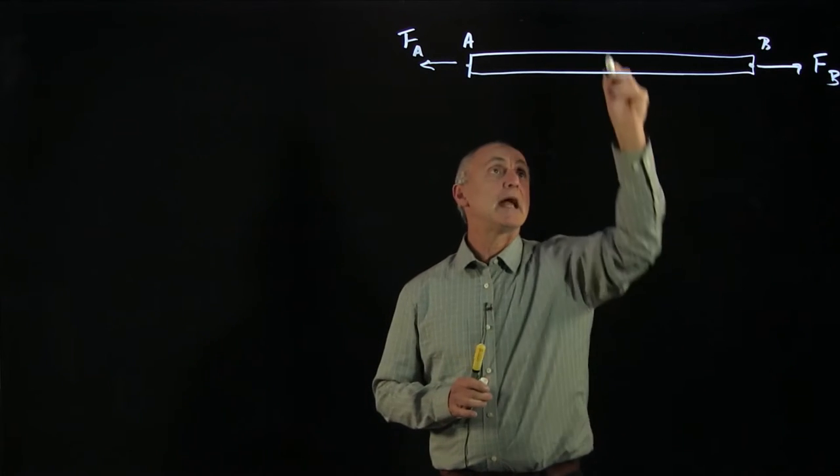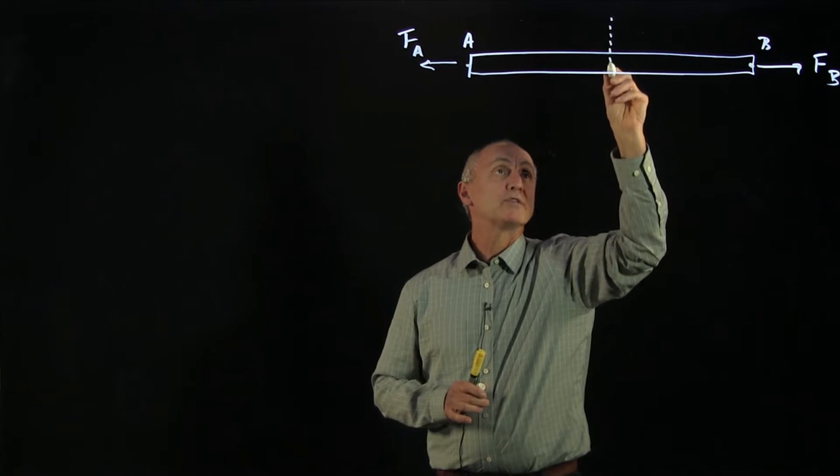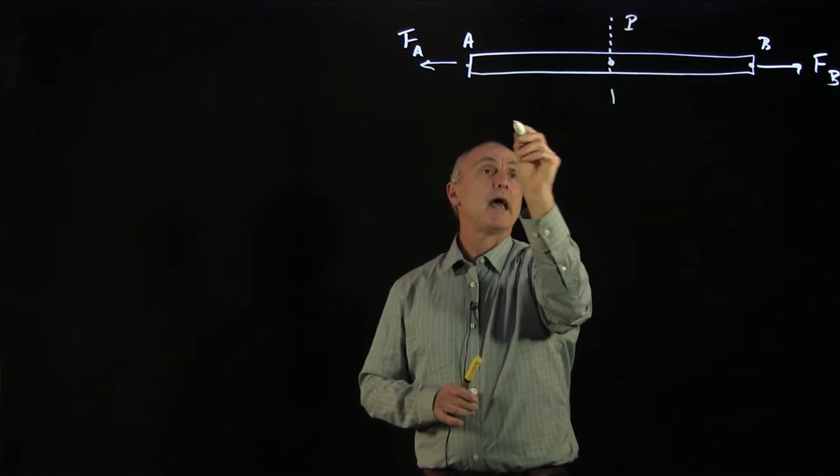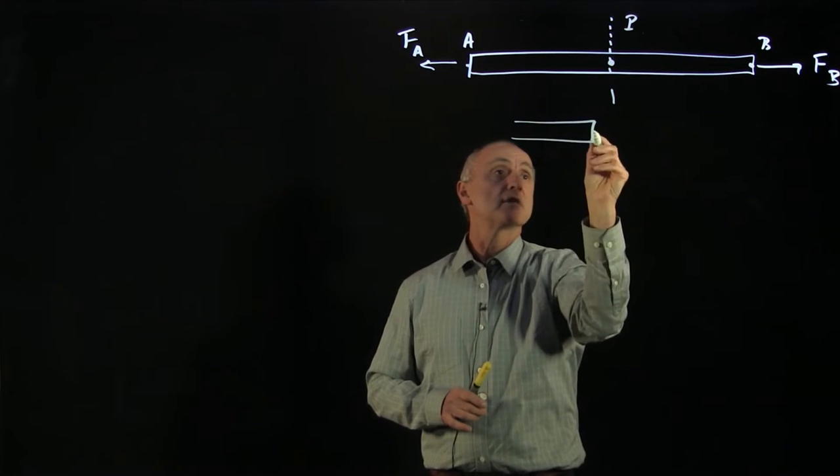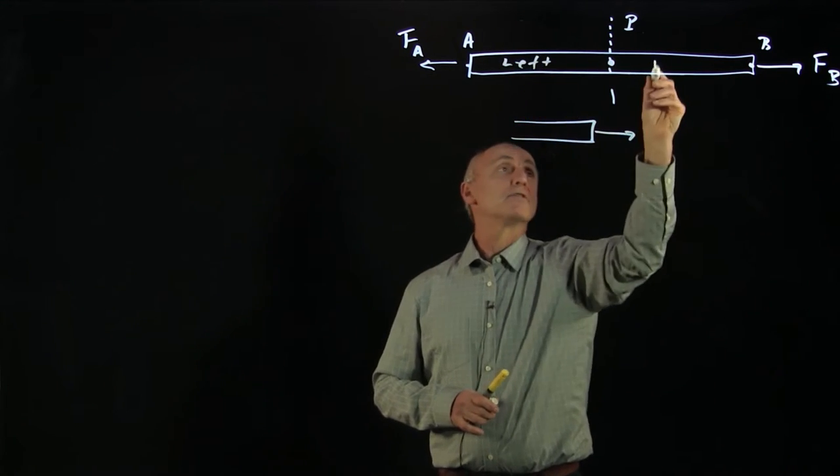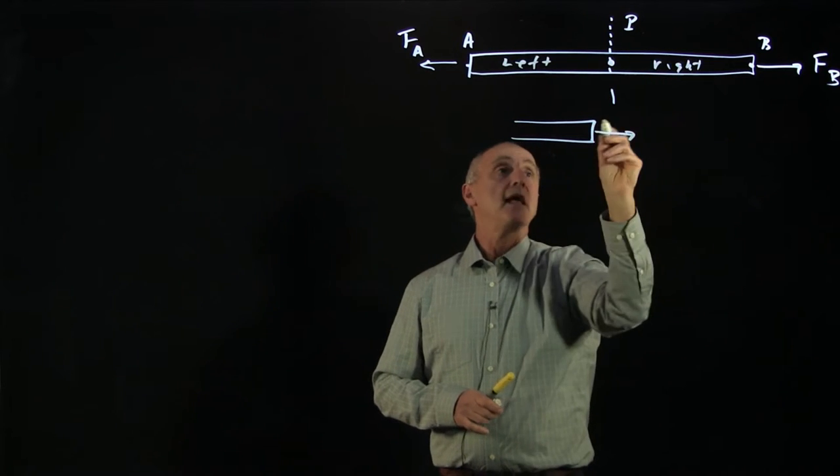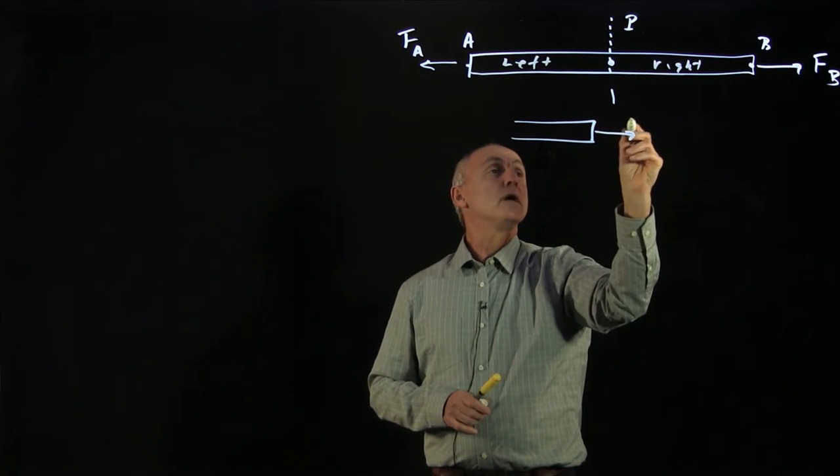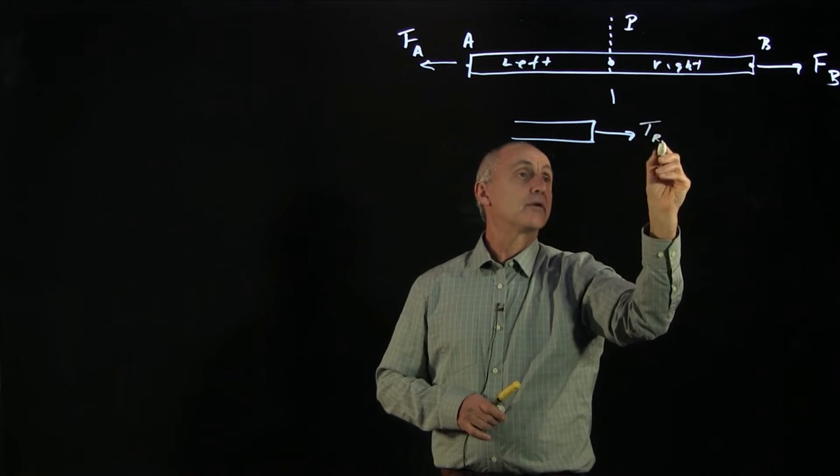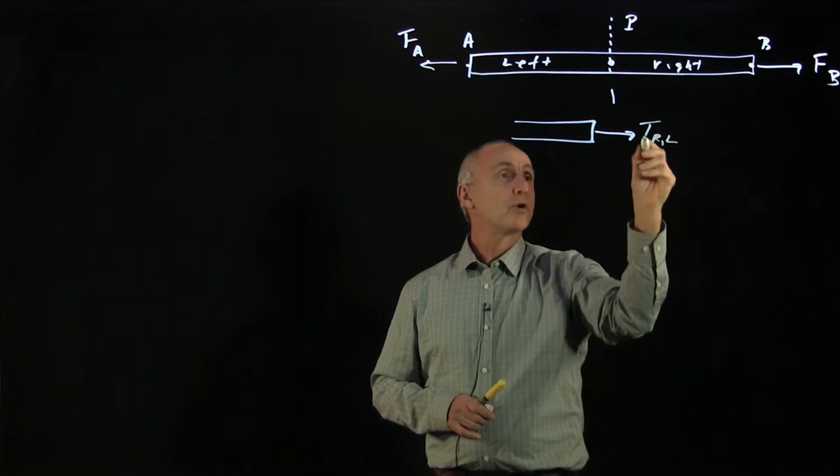What we meant by tension at any point in the rope was that we took an imaginary slice of the rope, P, and we looked at the two sides. Here, if we call this the left side and this the right side, then on the left side, we have that the right side of the rope is pulling the left side of the rope by some force F.